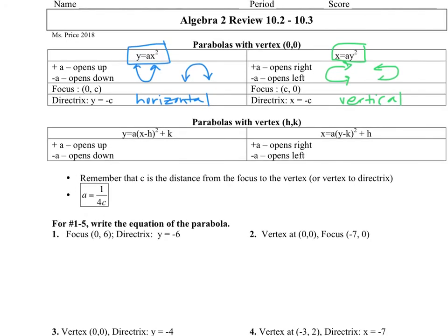When we move the vertex instead of keeping it at the origin, it now has vertex at H comma K. That makes things a little trickier. These parabolas will open up and down.